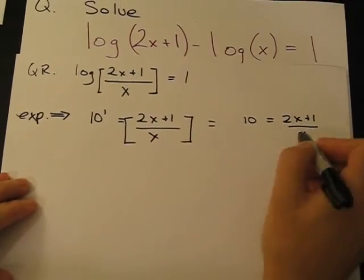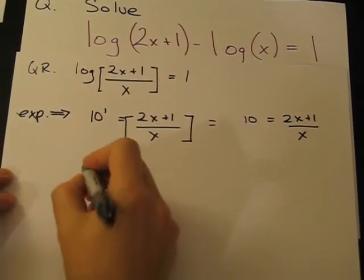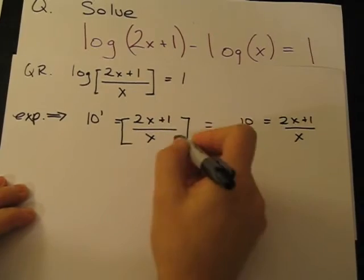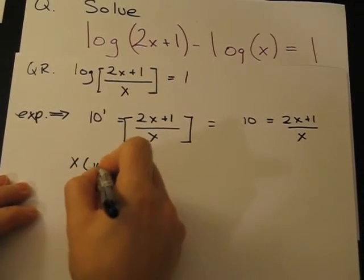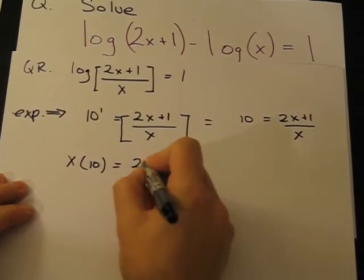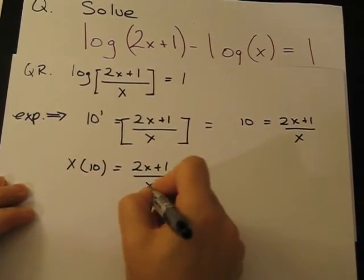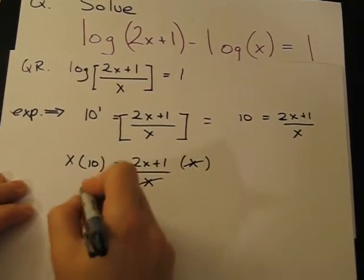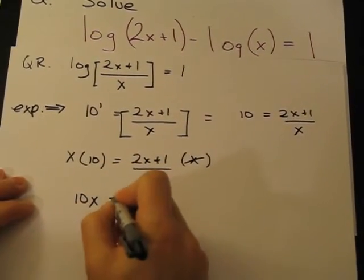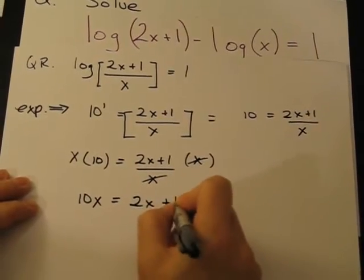The next thing we're going to do is clear our fraction. So we'll multiply both sides of the equation by x. And it clears that x out. This then becomes 10x = 2x + 1.